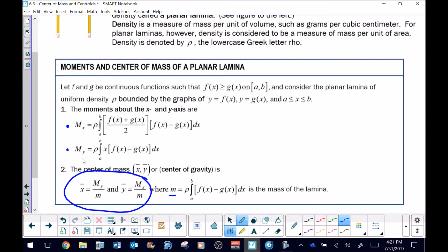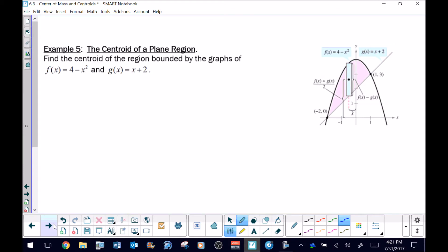Without further ado, we're going to do example five. I'm going to focus on finding the moment about the y-axis first. I want you to look at this formula. You're going to be taking the ρ, the uniform density value, multiplied by the definite integral of x times f minus g of x with respect to x.